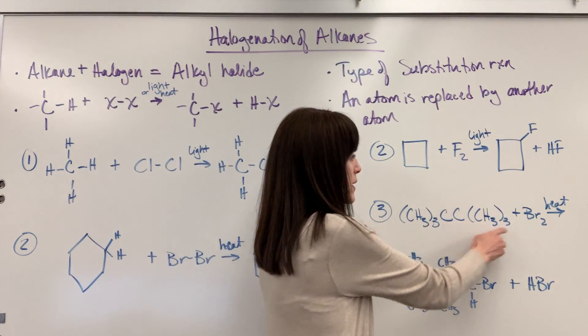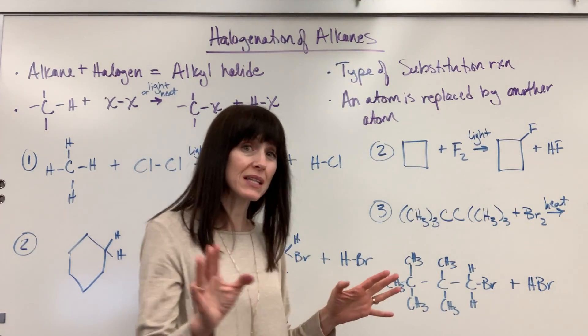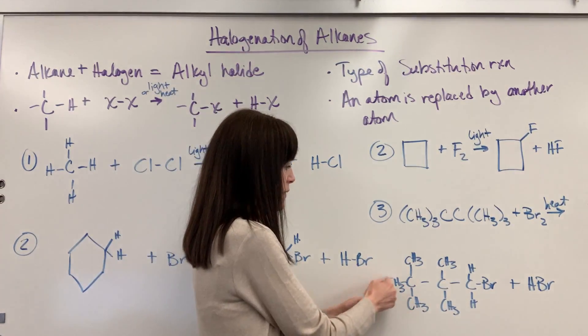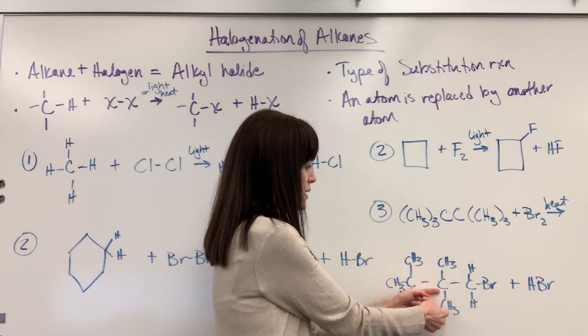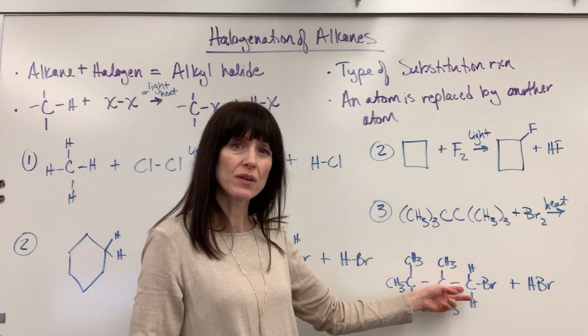So we have this long compound. We're going to react it with bromine, add heat. I wrote this out explicitly so you could see it. So this carbon has three methyl groups on it. This carbon has two methyl groups and then this carbon used to have a third methyl group.